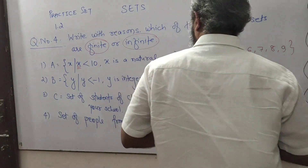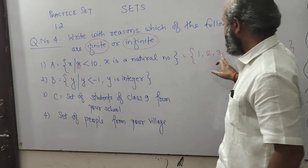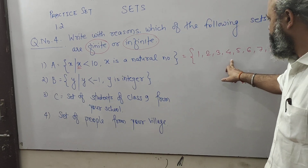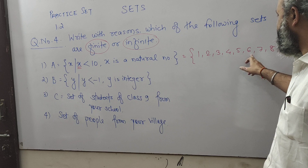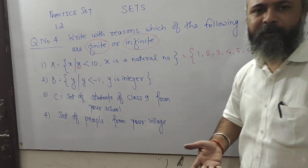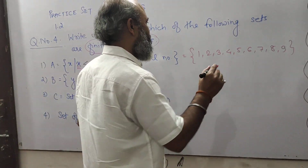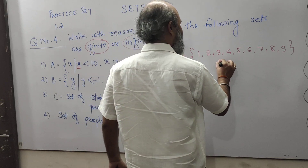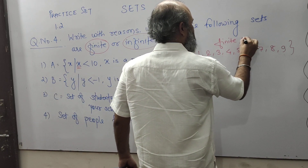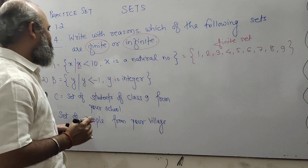The elements of this set — 1, 2, 3, 4, 5, 6, 7, 8, 9 — are countable. So this is called a finite set. Therefore, set A is a finite set.